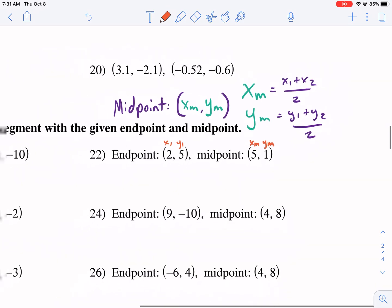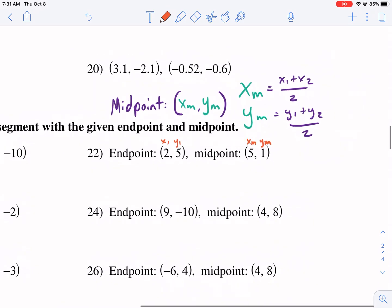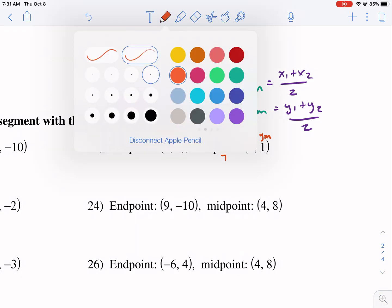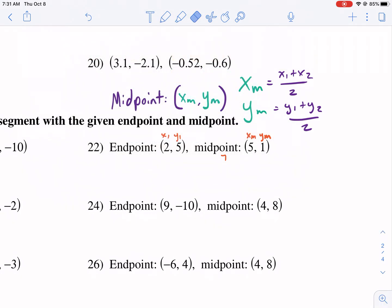Okay, so what I'm gonna do is I'm gonna show you a shortcut. The shortcut is this. We just look at the endpoint and we see how it changes from here to get to here and then we'll continue the pattern to find the other endpoint. Remember, our goal is we're trying to find the other endpoint.